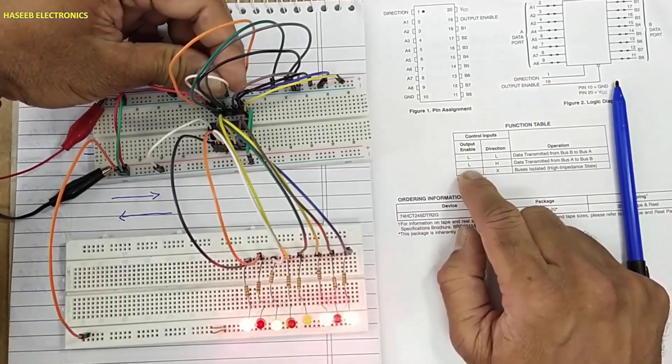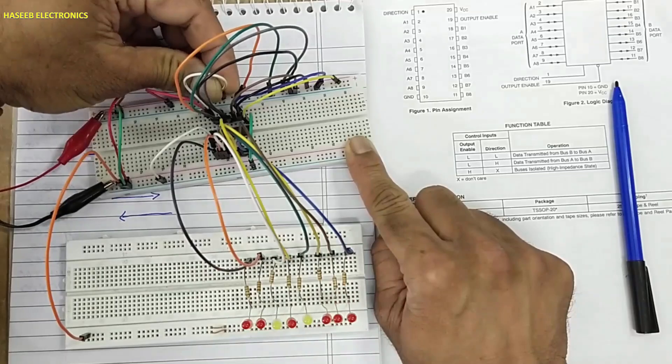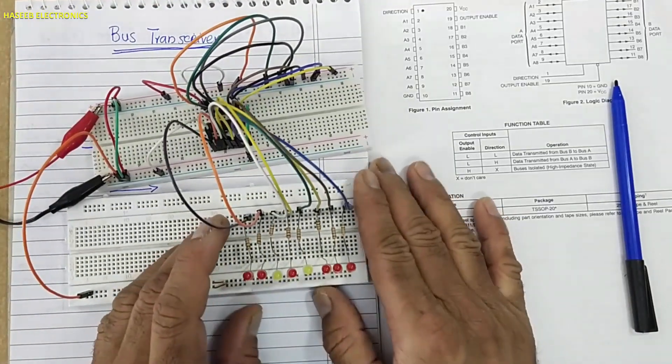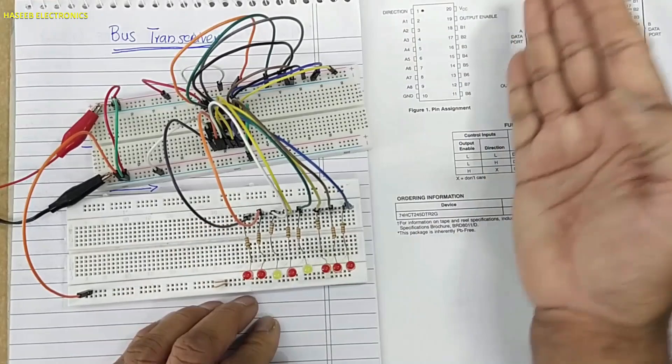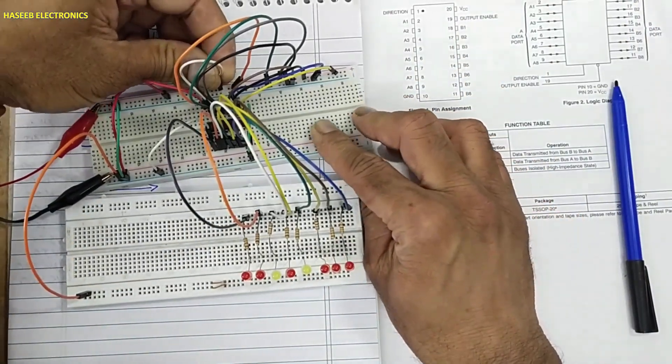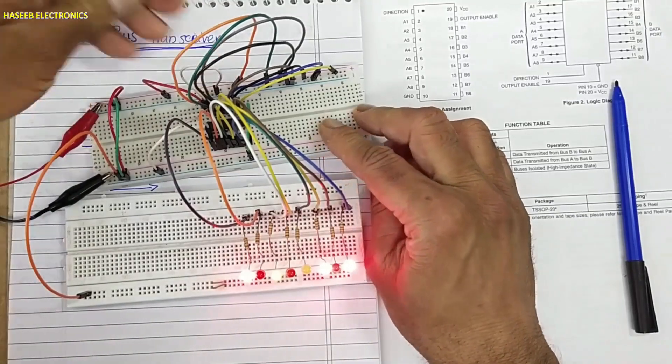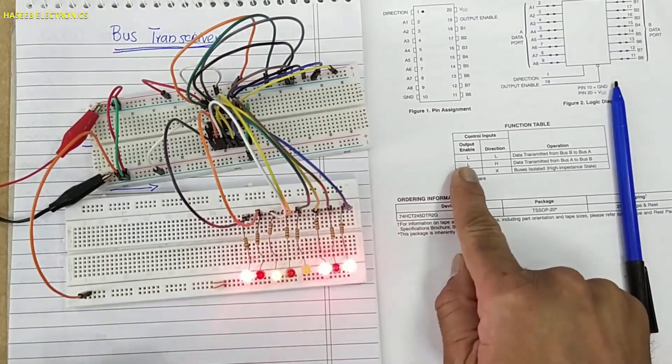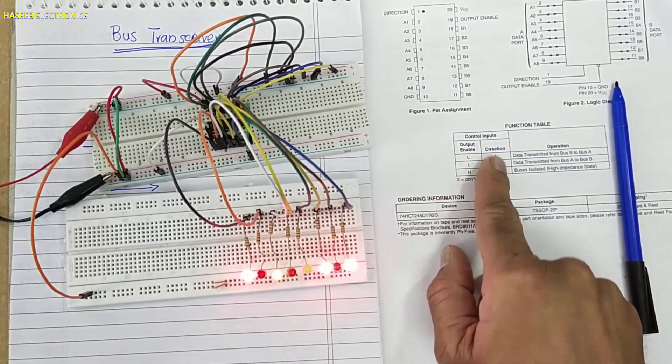If you connect output enable to high, now this IC is in disabled state - no data from A to B or B to A. Output enable pin must be low. Now data direction will be selected from direction pin.